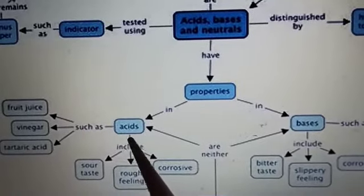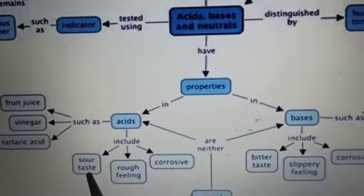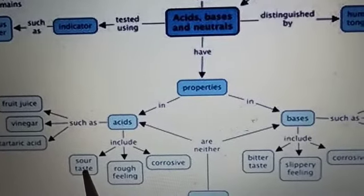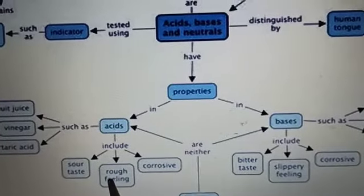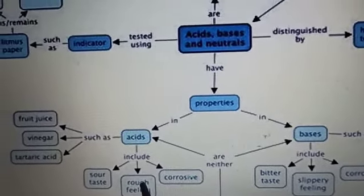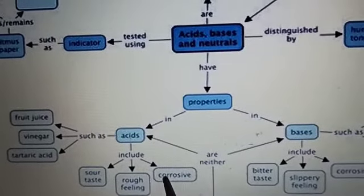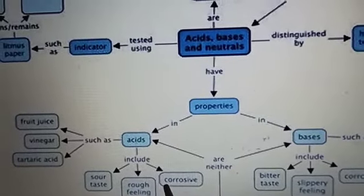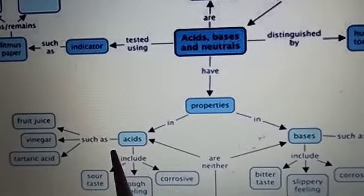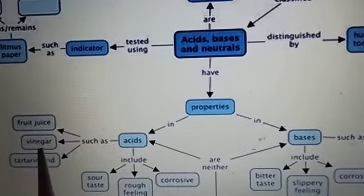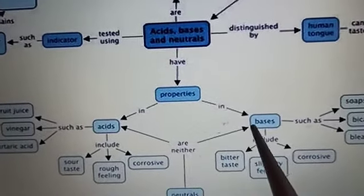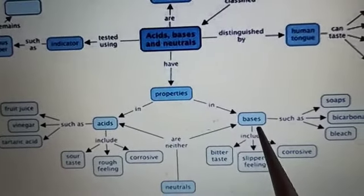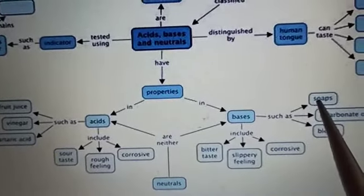Then you can see the properties of acids and bases. First of all see the properties of acids. Acids are sour in taste. Acids have a rough feeling. If you are touching them you can feel it rough and acids are corrosive in nature. Some examples of acids are fruit juice, vinegar and tartaric acid.